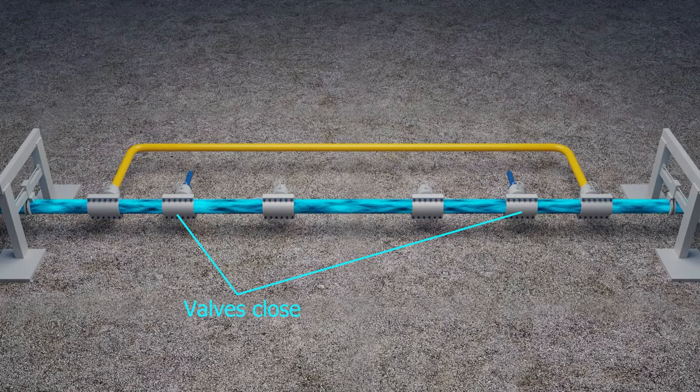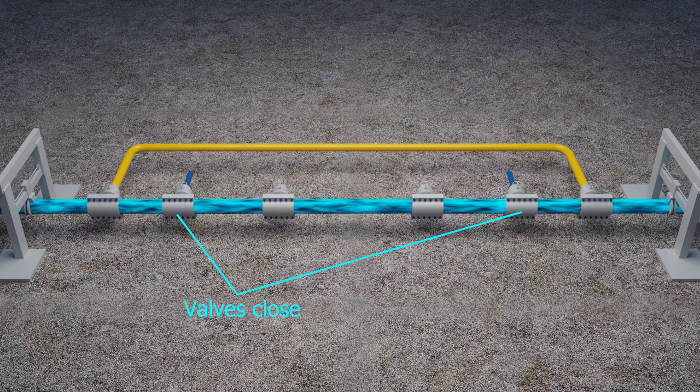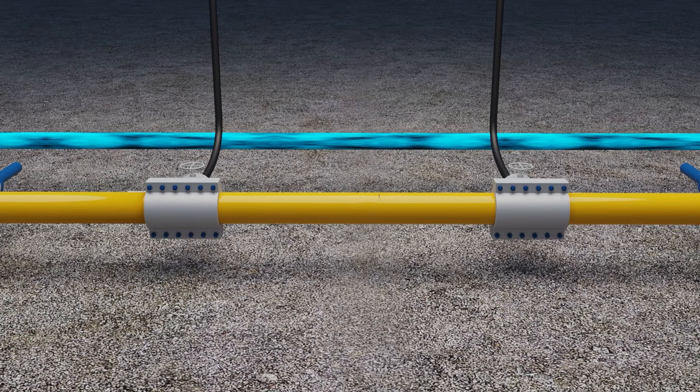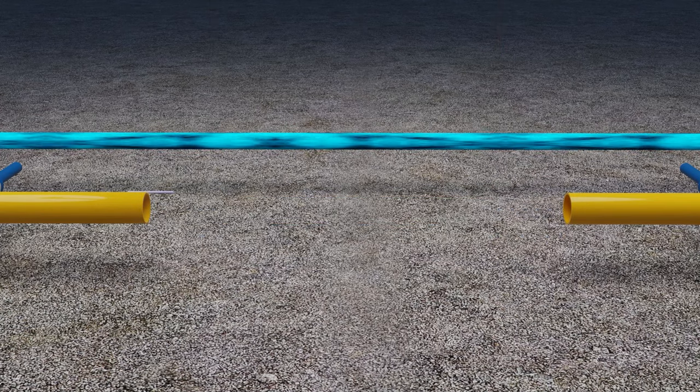A bypass pipe is installed to redirect the flow of oil. The valves here will close to stop the flow of oil in the damaged section. The oil inside will be flushed out. The damaged section will then be renewed.